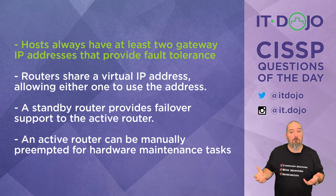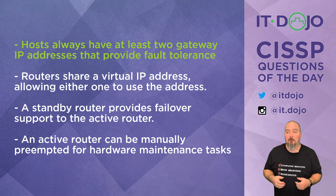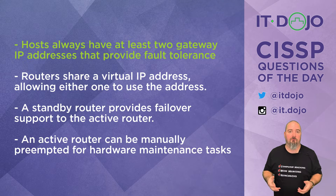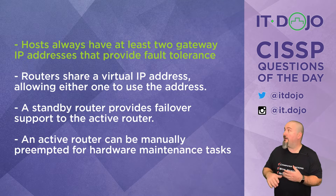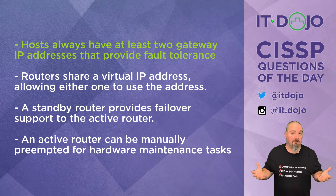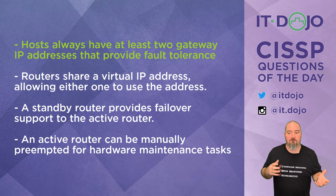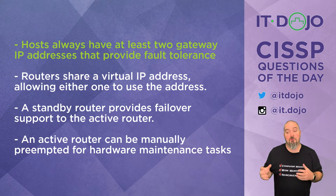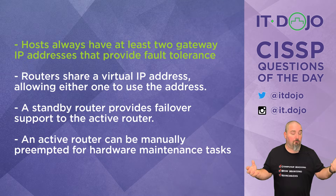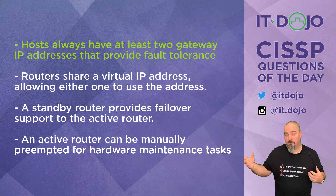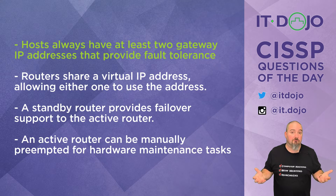The third answer choice says that the standby router provides failover support to the active router — totally, that's what this whole thing is really all about. The last choice says that an active router can be manually preempted for hardware maintenance tasks, and that's totally something that exists. If you have an FHRP-type solution implemented, you have the luxury of preempting the active router so that the former standby becomes active, and then you can take that router offline without any disruption to service for your users.